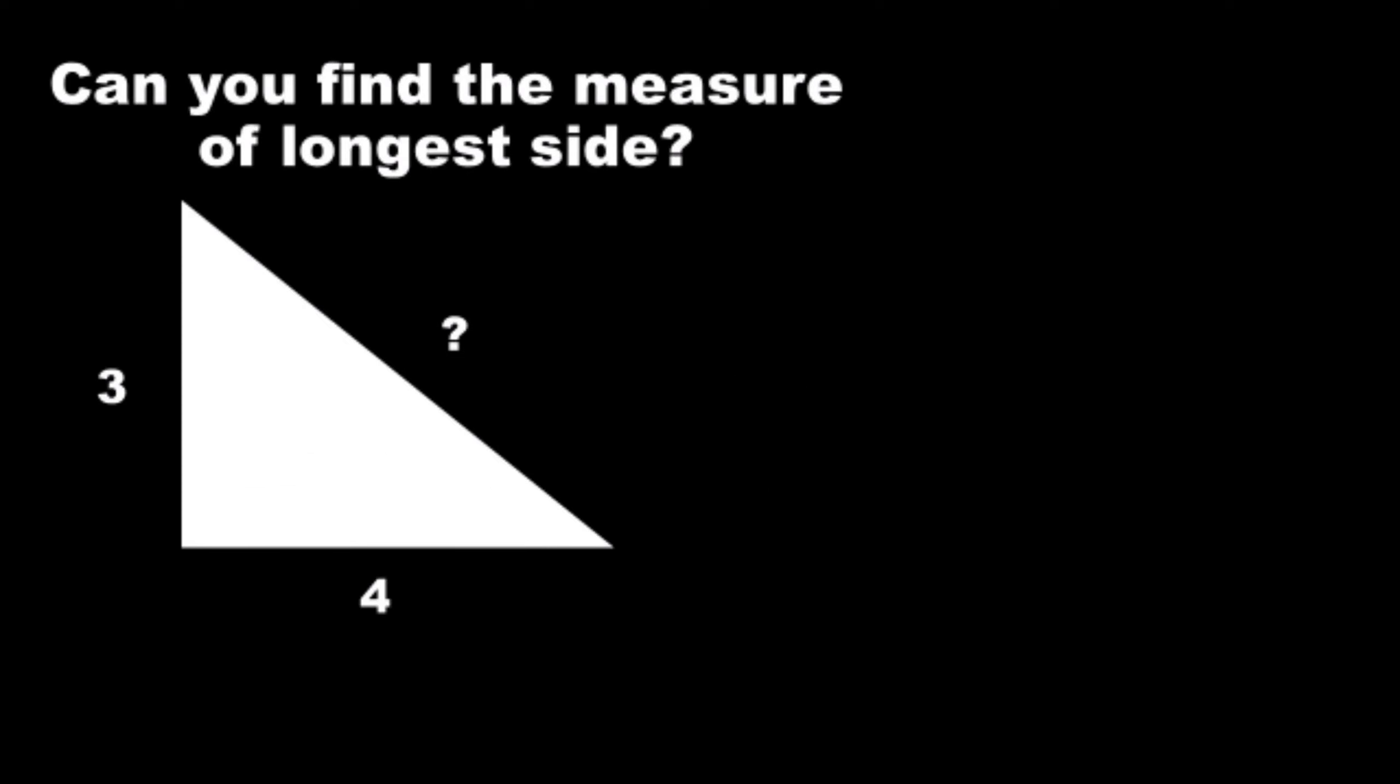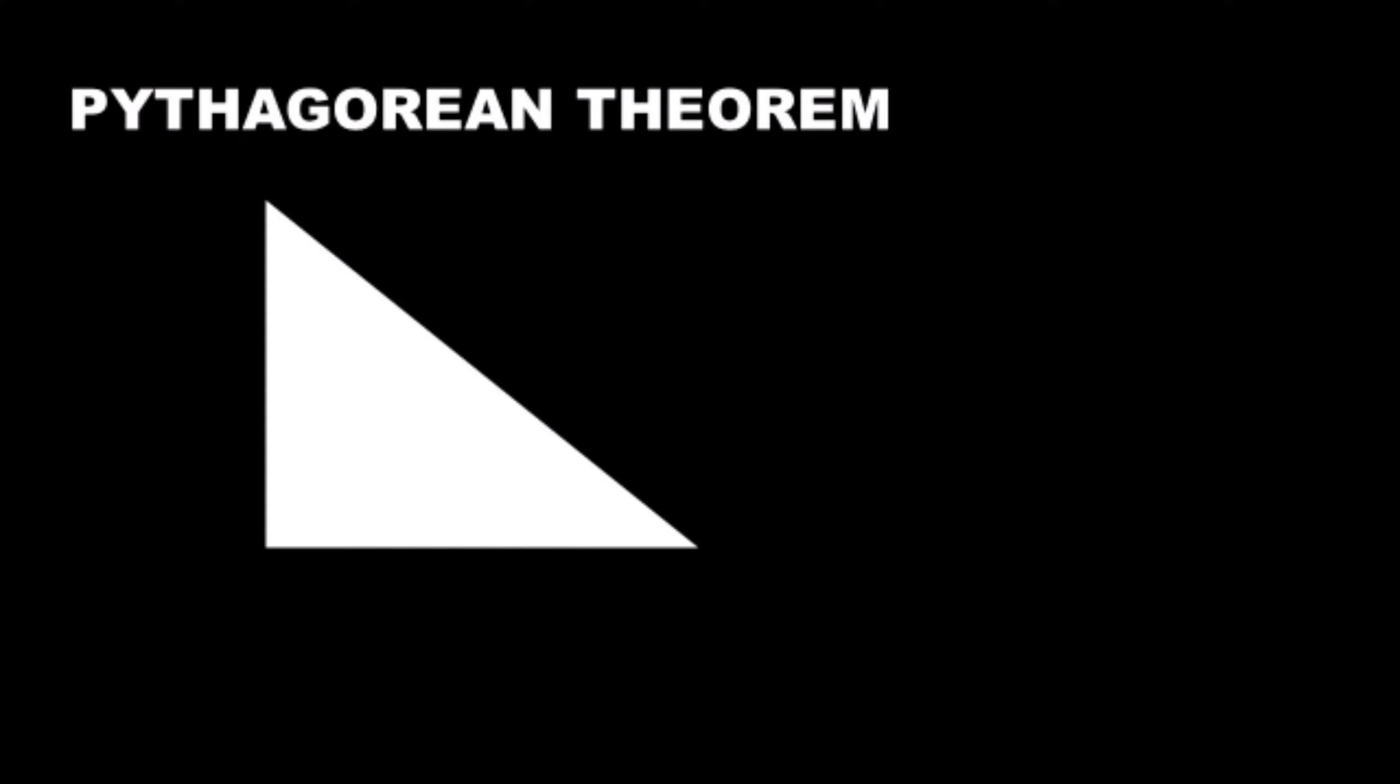Can you find the measure of the longest side? How long it is? Thanks to Pythagorean theorem, the job becomes easy. This given triangle is a right triangle. A right triangle has two legs, let's label them as leg A and leg B. The longest side is called the hypotenuse, let's label it as C.